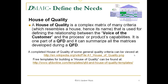House of Quality. A house of quality is a complex matrix of many criteria which resembles a house — that's where it gets its name. It is used for defining the relationship between the voice of the customer and the process or product's capabilities. It is one part of Quality Function Deployment, and it can summarize all the matrices developed during a QFD. A completed example can be found on Wikipedia, and free templates for building a house of quality are also available at that location.